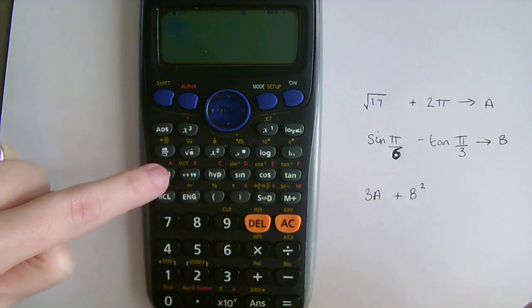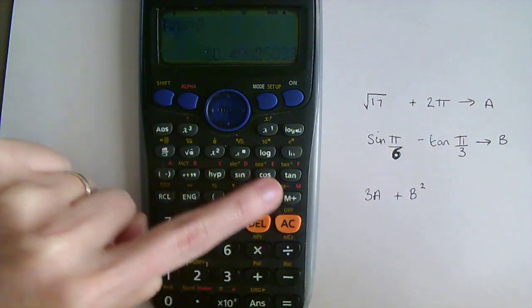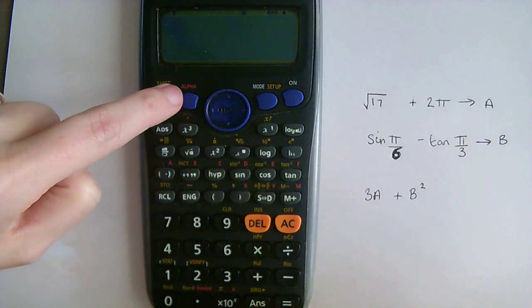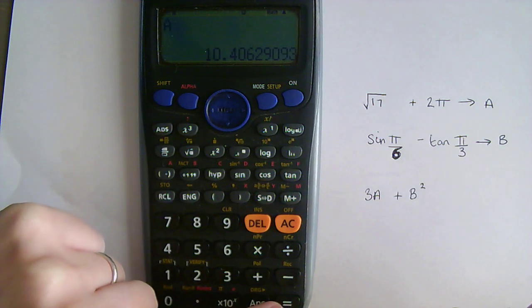And you know if you've done it right if it says it's gone to A. So we can double check by pressing alpha, because that's the red one, and A, and equals, and there's that 10.4 stored into A.